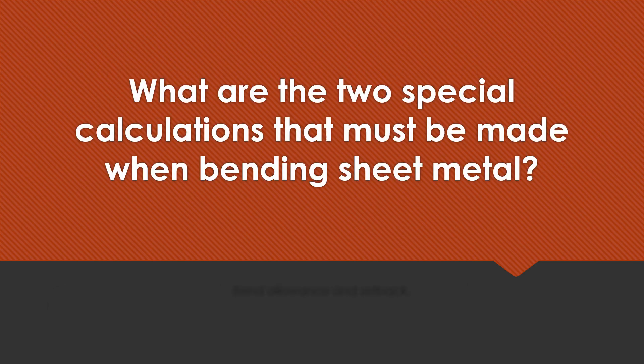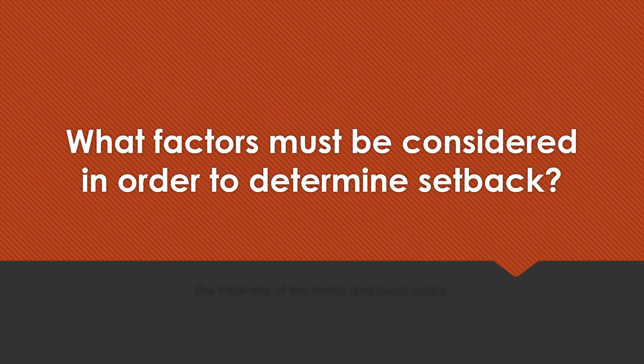What are the two special calculations that must be made when bending sheet metal? Bend allowance and setback. What factors must be considered in order to determine setback? The thickness of the metal and the bend radius.